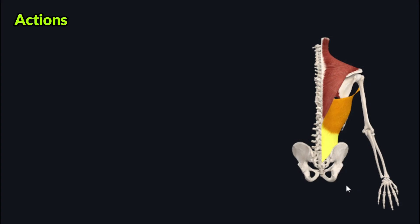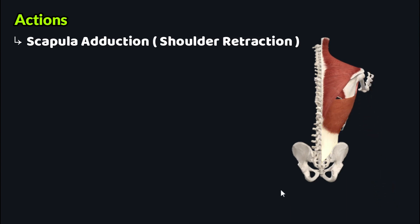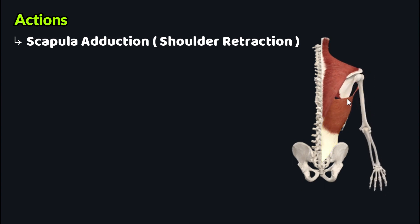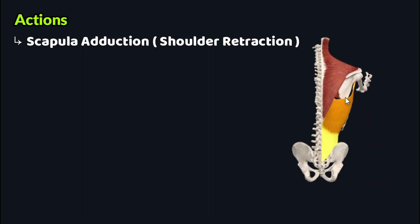The latissimus dorsi muscle performs a wide range of functions. One of these is scapular adduction, also known as shoulder retraction. The latissimus dorsi performs this action by acting on the inferior angle of the scapula — as you can see, when this muscle contracts it acts on the inferior angle of the scapula.